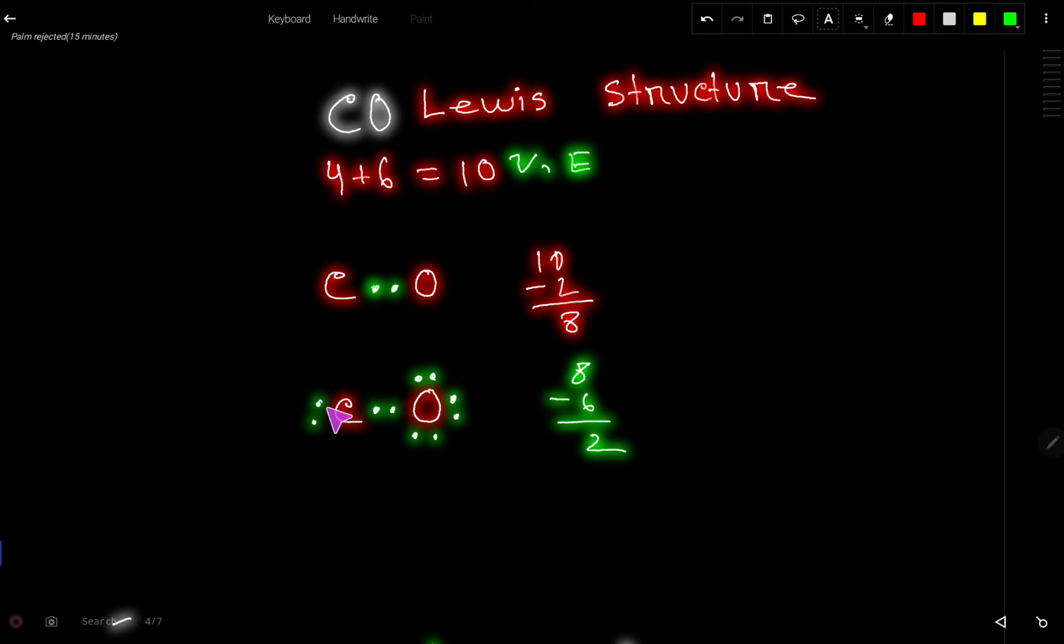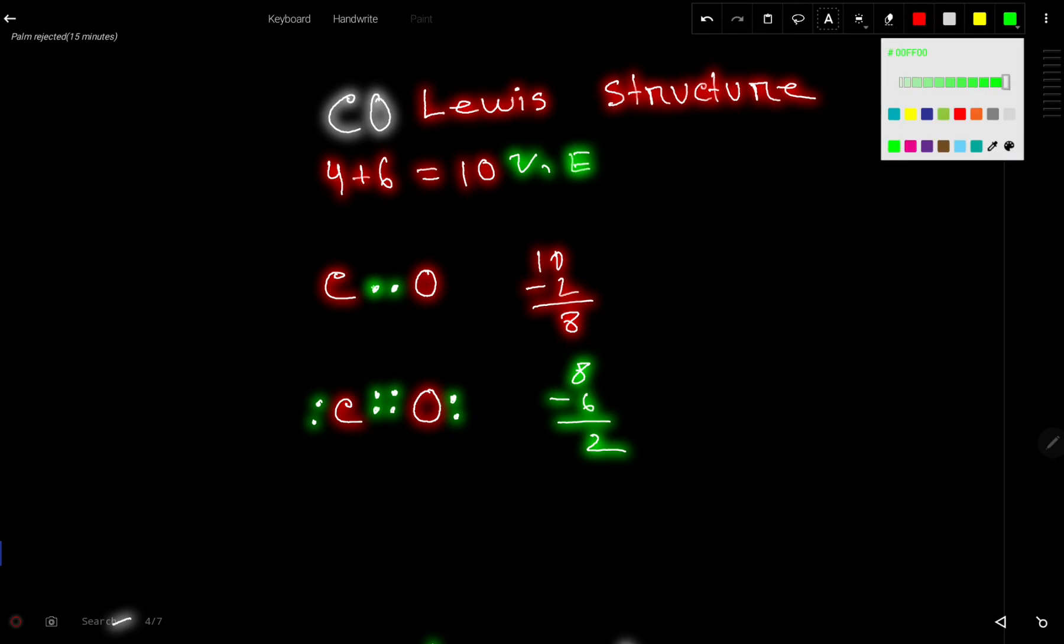Now what will I do? To fulfill the octet for carbon, I will convert this lone pair as a bond pair. Now this carbon has 2, 4, 6, so I have to move one more lone pair as a bond pair.